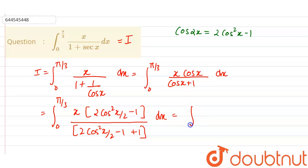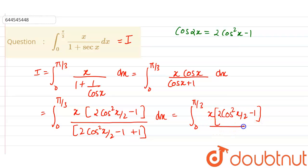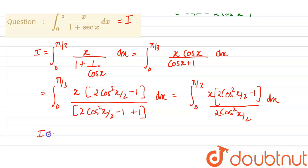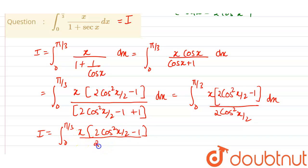And plus 1 here. So now it is integral from 0 to π/3, x into (2cos²(x/2) − 1), divided by 2cos²(x/2). The minus 1 and plus 1 got cancelled, so our modified I is equal to integral from 0 to π/3 of x · (2cos²(x/2) − 1) divided by 2cos²(x/2) dx.